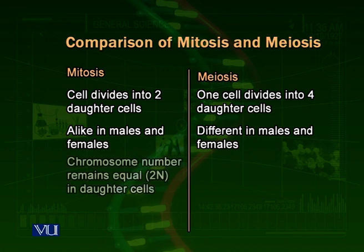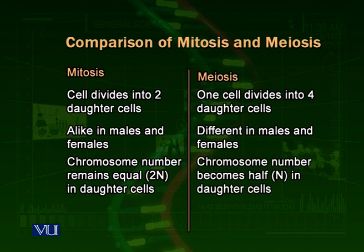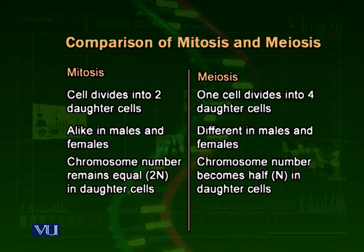In mitosis, the chromosome number remains the same — the daughter cells retain the 2n number of chromosomes. But in meiosis, the chromosome number is reduced to one half in the daughter cells. Whether there are four cells or one, the chromosome number is one half in the gametes. So mitosis and meiosis are different from each other: mitosis occurs in somatic cells, while meiosis occurs in germ line cells.